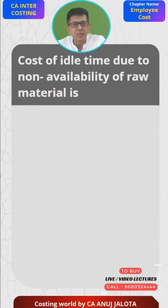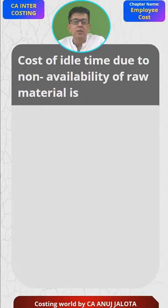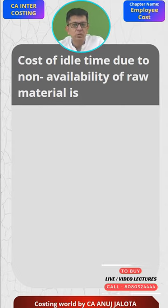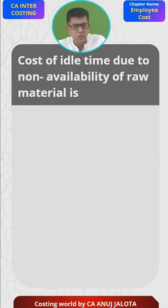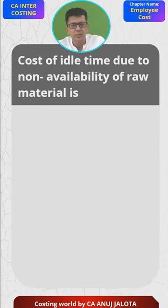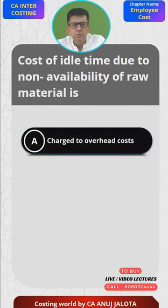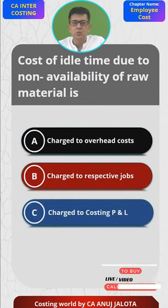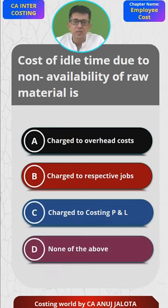Cost of idle time due to non-availability of raw material is — workers wanted to work but there was no material, so therefore they were sitting idle. Suppose workers were sitting idle for three hours and we were paying them at the rate of 10 per hour, so 30 rupees is the cost of idle time. The four options are: A, charged to overhead cost; B, charged to the respective jobs; C, charged to costing P&L; and D, none of the above. Think of the correct answer and reply in the comments with the explanation.